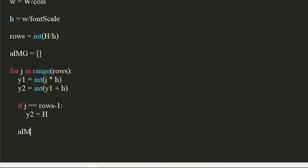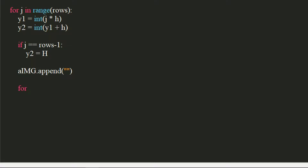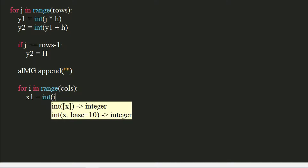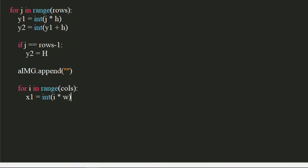Let's append an empty string to the array that we declared earlier — we will modify this string later. Use another for loop in range of number of columns. The x1 coordinate would be the integer of i times w. The x2 coordinate would be the integer of x1 plus w. Similar to what we did earlier, if i equals the last column, we will correct the x2 coordinate by setting it to the image's width.